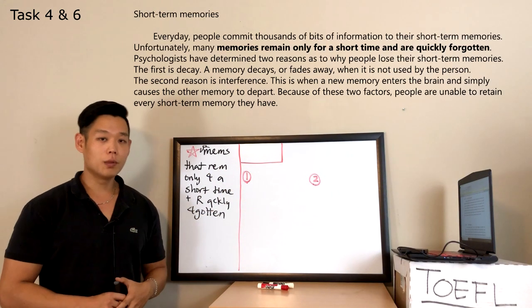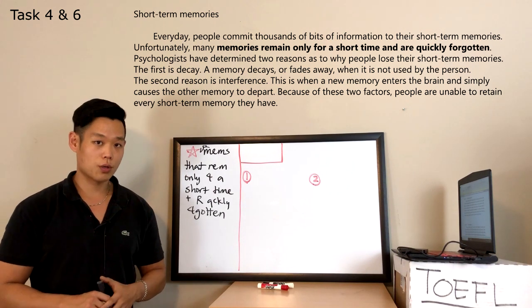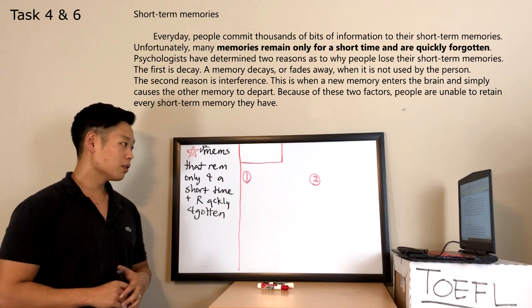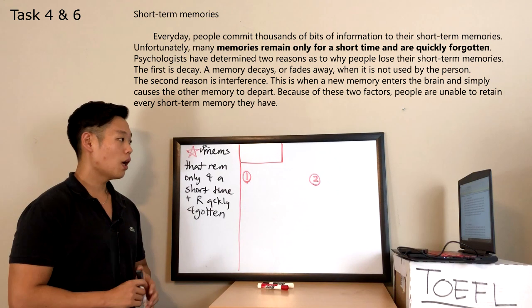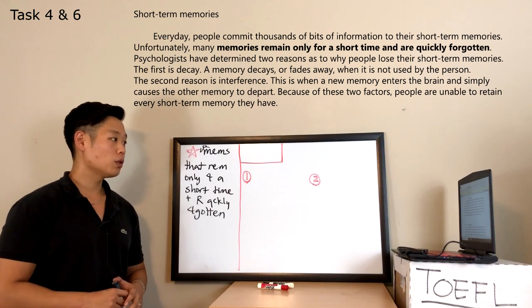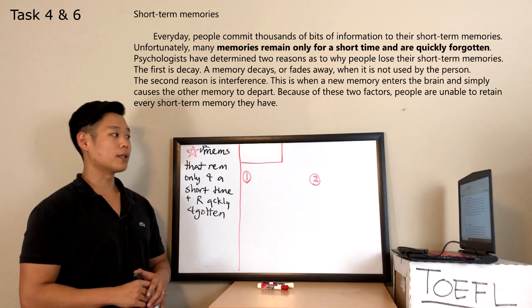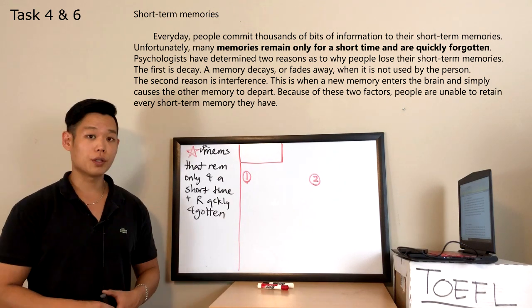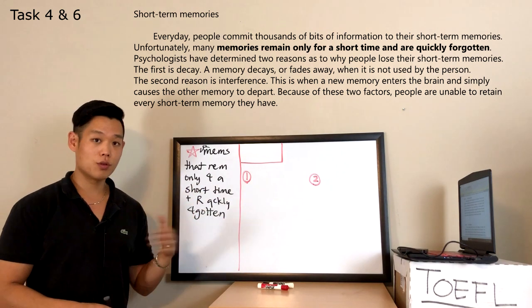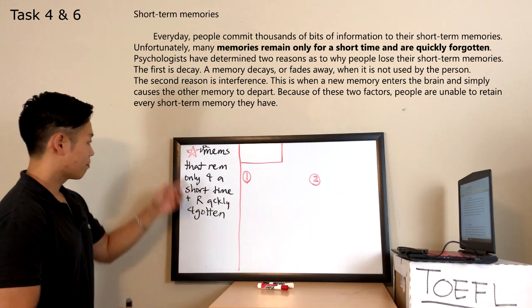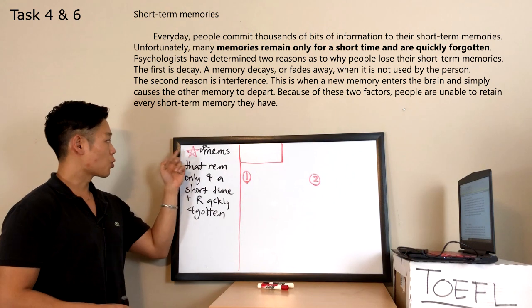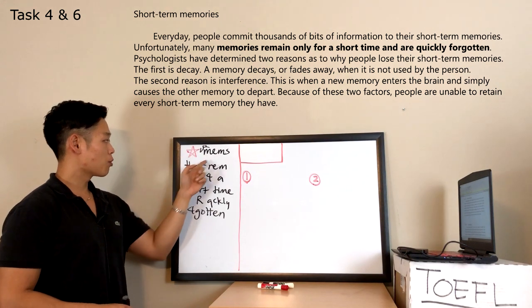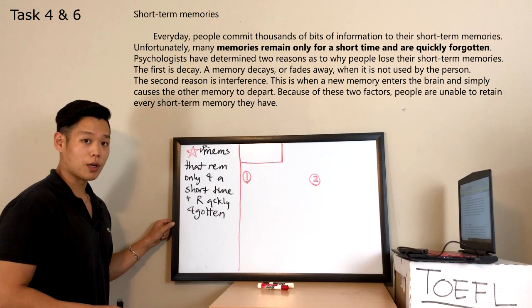That's the reading passage that we'll be looking at today. The topic is short-term memories. Now, I want you guys to look at the second sentence. It says, unfortunately, many memories remain only for a short time and are quickly forgotten. Now, if you have reading comprehension skills, you should have noticed that that sentence described to us what short-term memories are. This is the definition. Short-term memories, which are memories that remain only for a short time and are quickly forgotten.